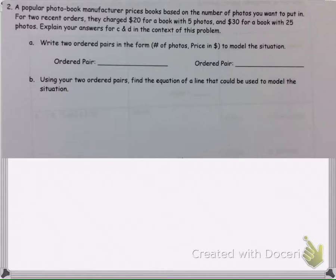So first of all, we're asked to write two ordered pairs. They tell us to put the photos first. So we're going to start with five photos. If you order five photos, the price is $20.